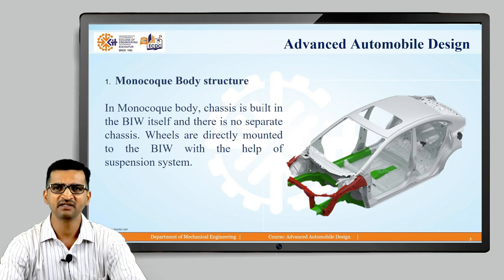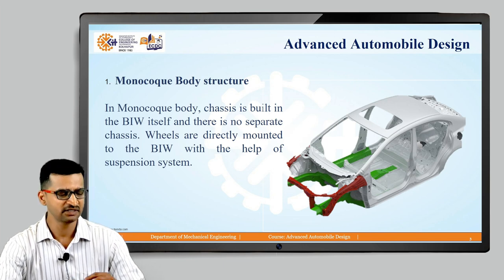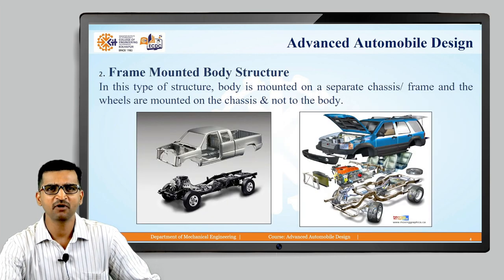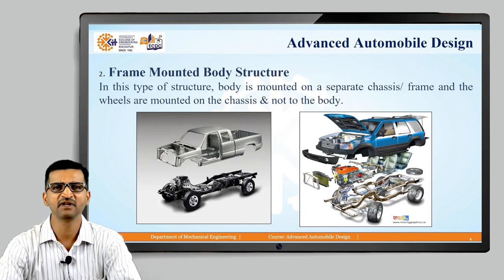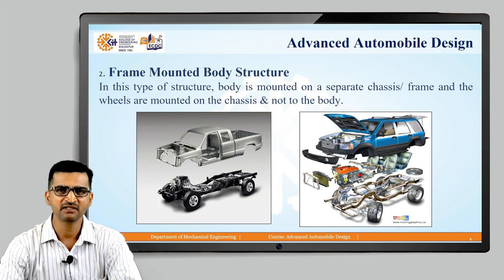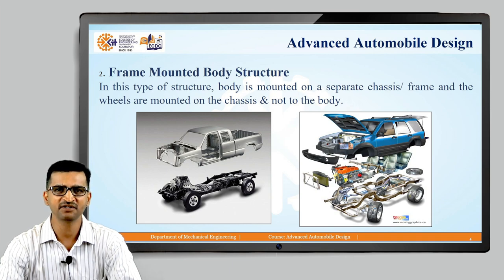In monocoque body, the chassis is built into the BIW itself and there is no separate chassis. Wheels and everything are connected directly to this monocoque structure. The second type is the frame mounted body structure. You can see the idea is very clearly illustrated here: the passenger compartment is shown on the upper part and the actual separate frame is shown in the lower part. The passenger compartment is separate, and its only function is to accommodate passengers, while the entire load transfer is taken care of by that separate frame.